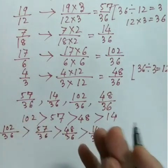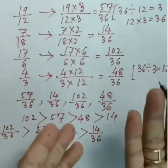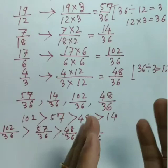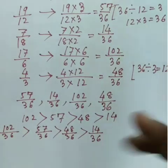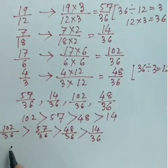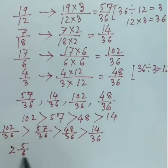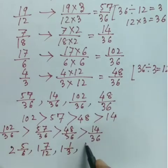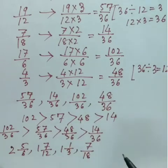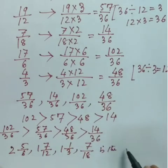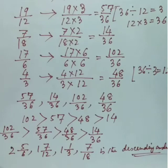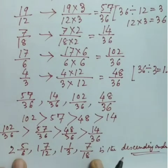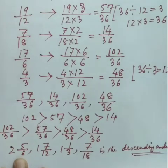Most importantly, you must write the original fractions in your final answer. So in descending order, the original numbers are: 2 and 5/6 > 1 and 7/12 > 1 and 1/3 > 7/18. This is the descending order — big to small. Never forget to write the original numbers in your final answer.